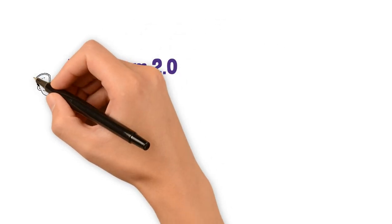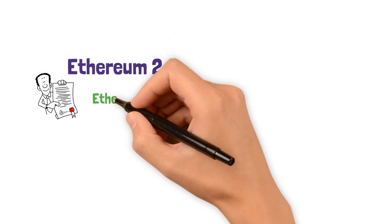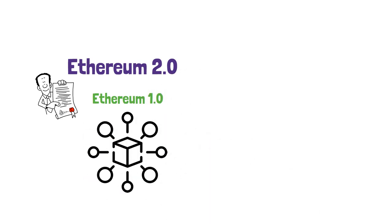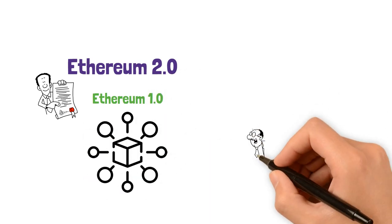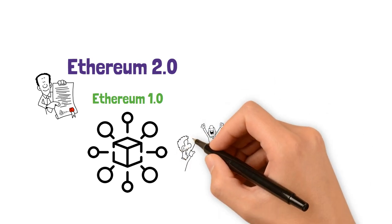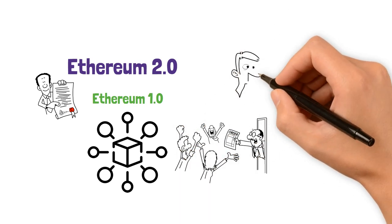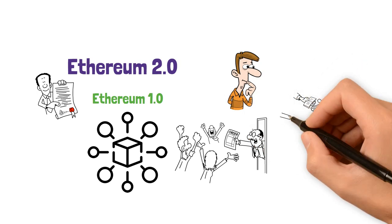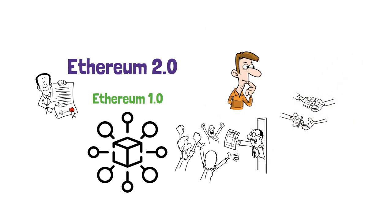Ethereum 2.0. Let's first take a quick overview of Ethereum 1.0. Ethereum 1.0 introduced the concept of decentralized applications and smart contracts, revolutionizing the blockchain industry. However, it faced challenges with scalability as the network became congested and transaction fees soared during peak usage times.